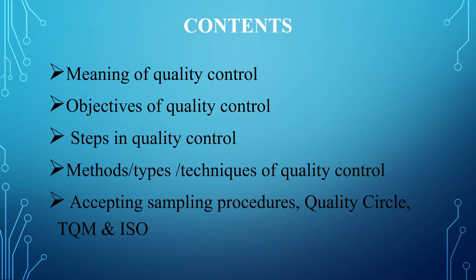Let us see the contents of this unit. We will be covering: first, the meaning and definition of quality control; objectives of quality control; the steps involved in quality control; methods; types or techniques of quality control and acceptance sampling procedures; quality circle; TQM and ISO. Today we will be covering the first three concepts — meaning of quality control, objectives, and the steps involved.